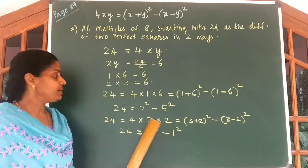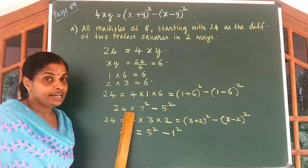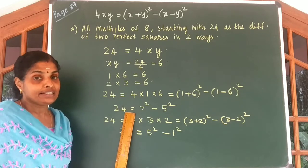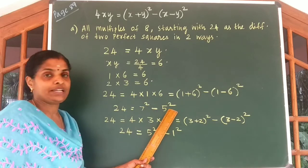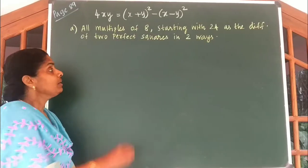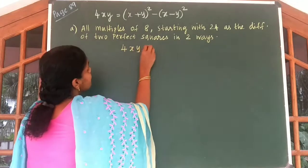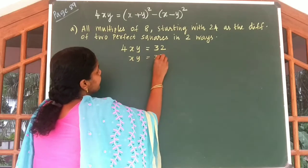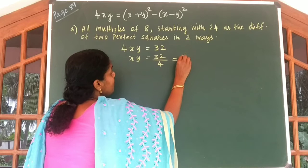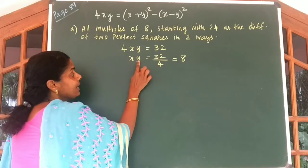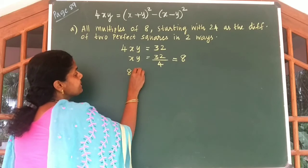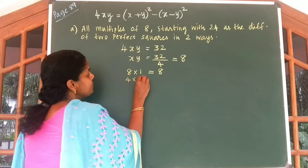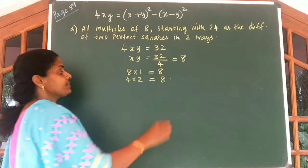Similarly, we can write the next multiple of 8. 3 eights are 24, the next multiple is 4 eights are 32. So let us write 32 as the difference of 2 perfect squares in 2 ways. We write 4xy is equal to 32. From this, xy is equal to 32 by 4, which gives you 8. To get 8, we can take x and y as 8 and 1, since 8 into 1 is equal to 8.